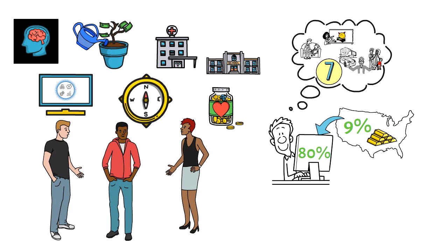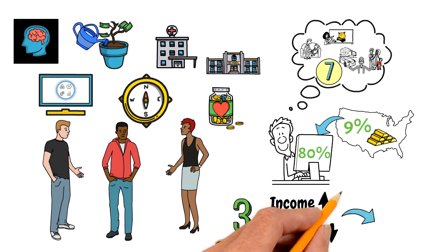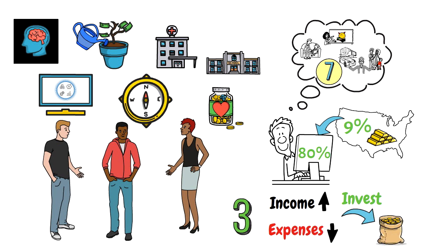Also understand that a high income is not enough. Wealth is always created by three basic components. Generating higher income, reducing expenses and investing the difference. These components always apply. No matter if you work for a fixed salary or if you run a fortune 500 company.